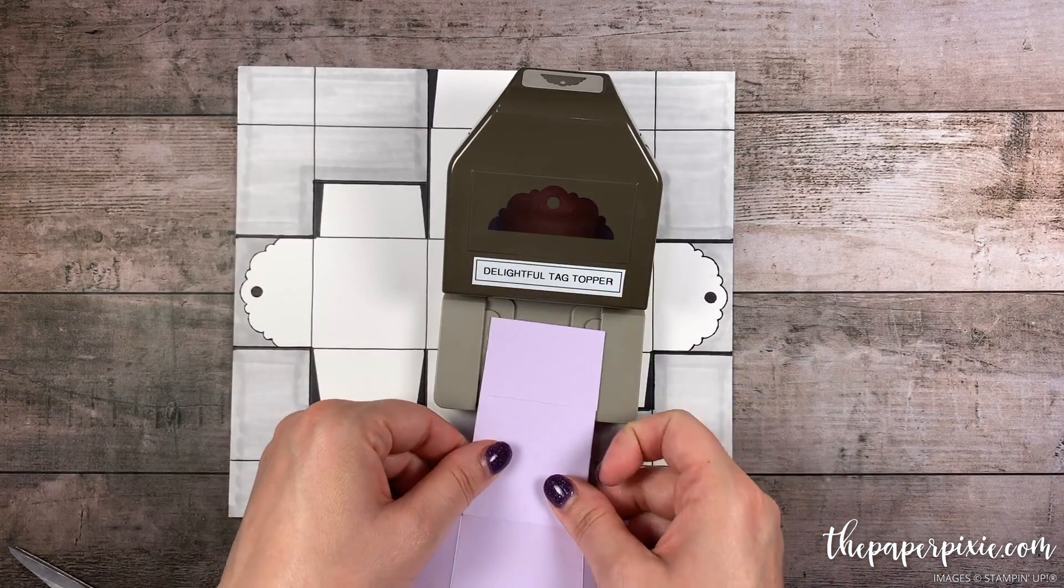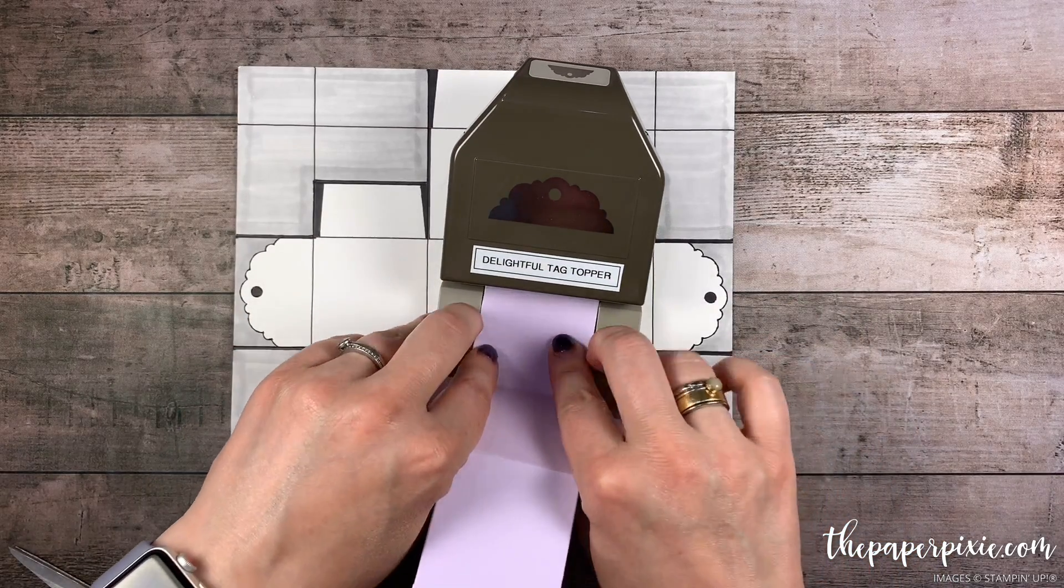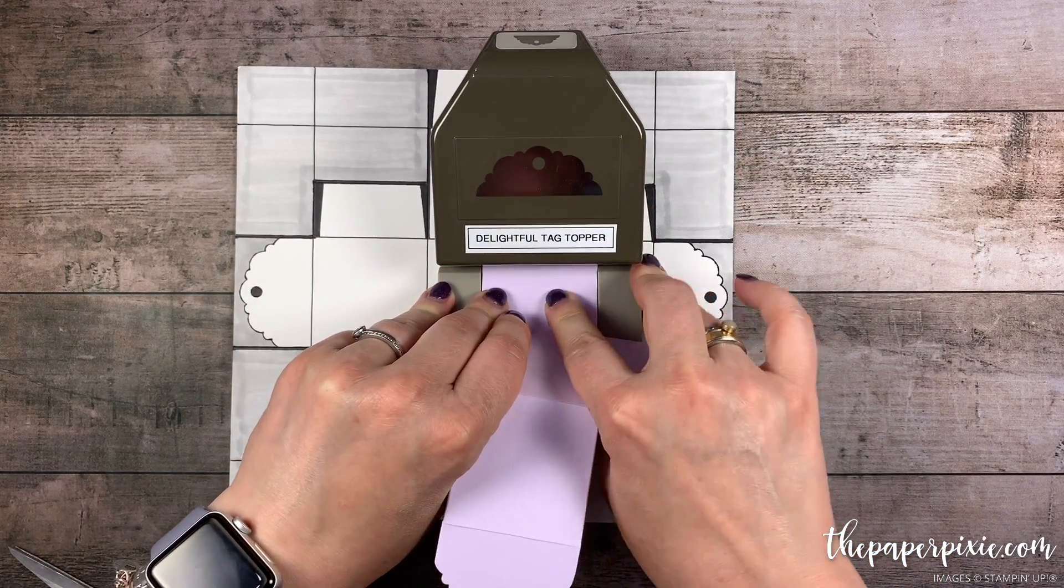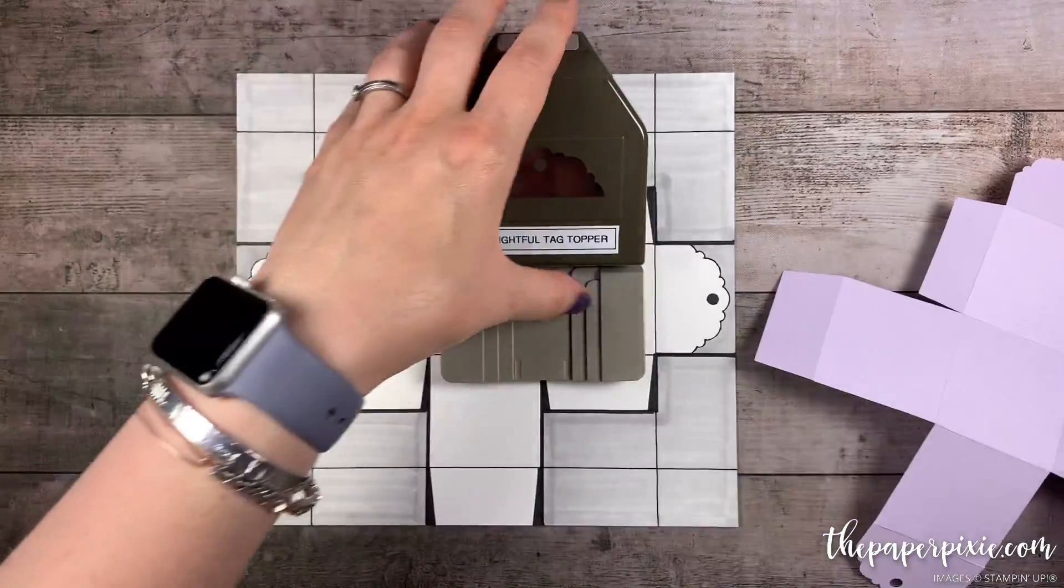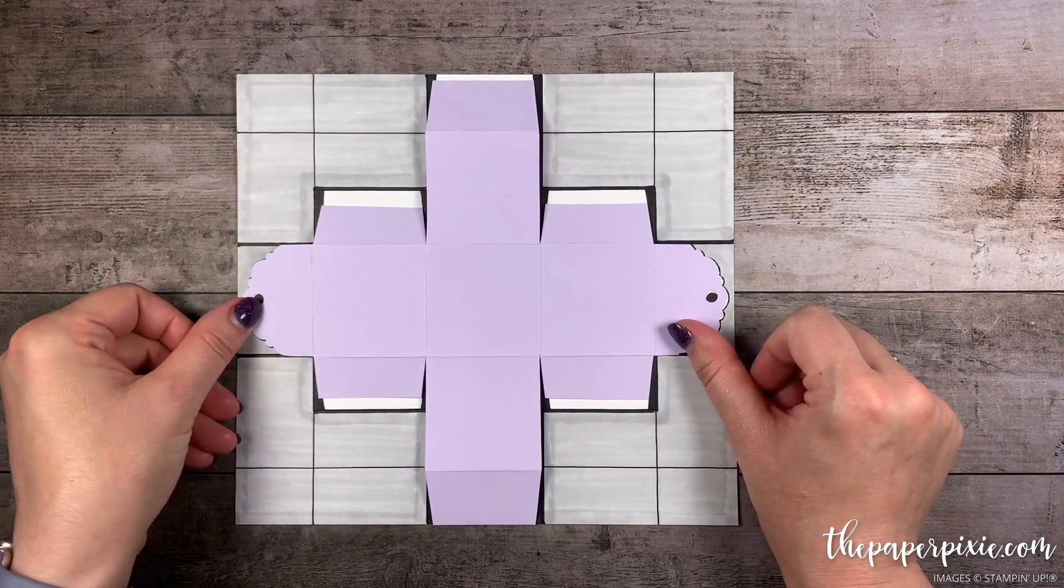Then I'll do the same thing to the opposite side. Again just folding things out of the way before we punch. Look how cute that is. I love that. Now we look like our template here.